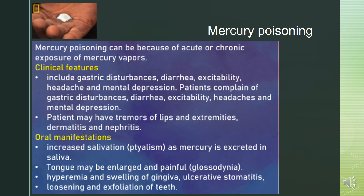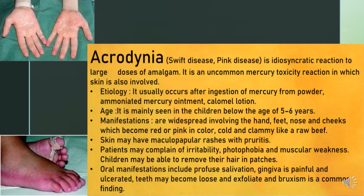The tongue may be enlarged and there may be glossodynia. There is hyperemia and swelling of gingiva, ulcerative stomatitis, and loosening and exfoliation of teeth. Acrodynia, also called Swift disease or pink disease, is an idiosyncratic reaction to large doses of amalgam.